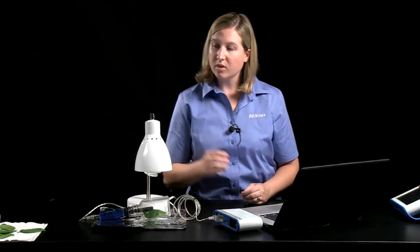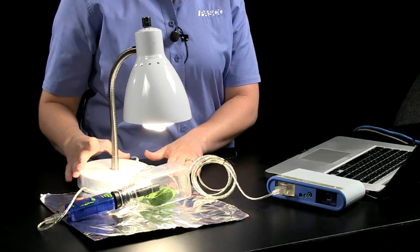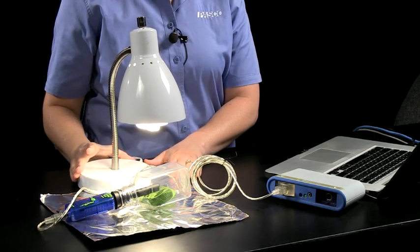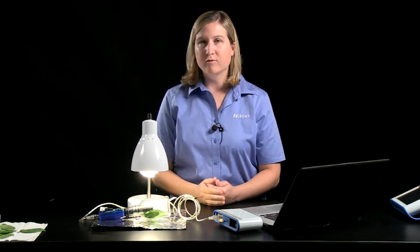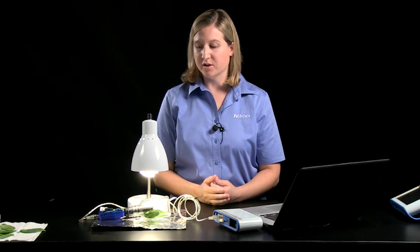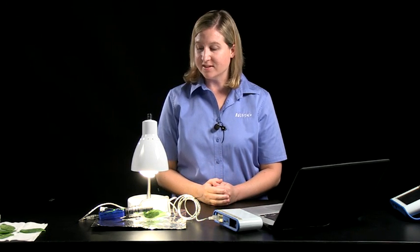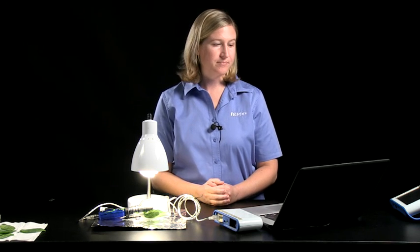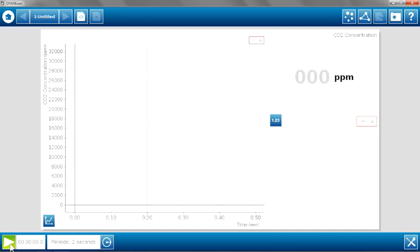So I'm now ready to begin data collection. I'm going to turn on the light, and I'm going to let the light shine directly on the bottle with the spinach leaves inside for about 30 seconds or so. The carbon dioxide sensor can be affected by light, and this will allow us to have a stable reading inside that bottle before beginning to collect data. When we're ready to collect data, we're just going to hit the play button to begin data collection.